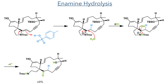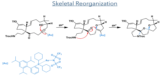The completion of this macrocycle brought to an end the cyclase phase of the synthesis, which constructed the carbon skeleton of the molecule. This brings us to the second phase, the oxidase phase, which involves setting the correct oxidation pattern on the framework and installing all of the necessary functional groups. This began with a gold-promoted skeletal reorganization. The mechanism presented has not been proven and is only one of several that could be proposed, so the presenter invites comments on alternative pathways.